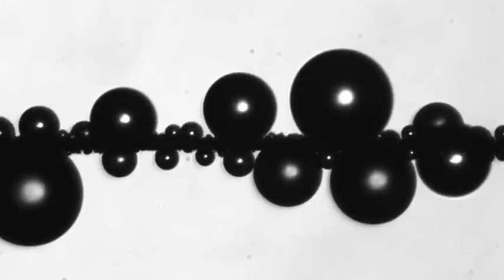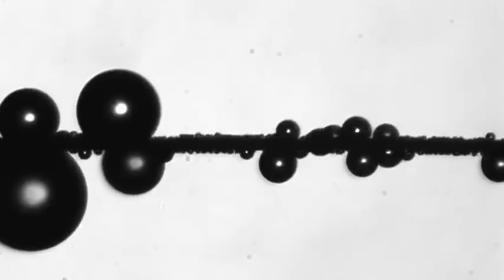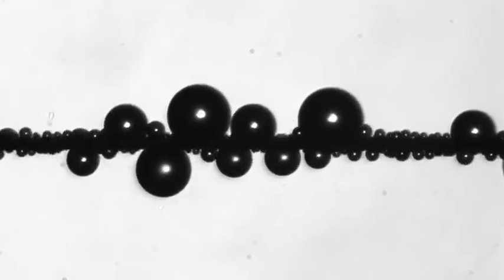As droplets accumulate on the fiber by condensation, the growing droplets magically disappear upon coalescence. The mechanism behind the unexpected disappearance is best shown by two droplets on opposite sides of the fiber.